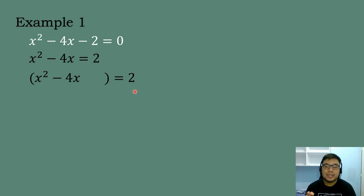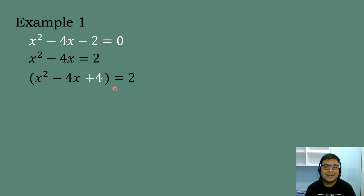Because negative 2 times negative 2 is equal to positive 4, we place positive 4 in the blank. Whatever we add to one side of the equation, we also add to the other side. So we add positive 4 to both sides, and then we simplify.